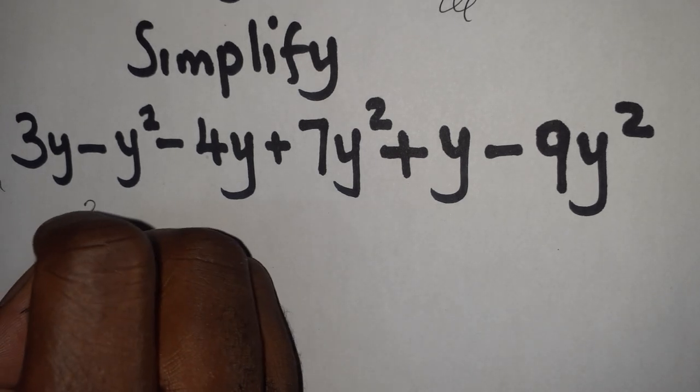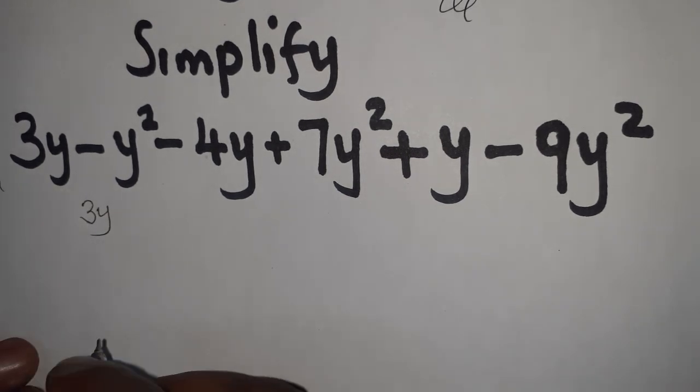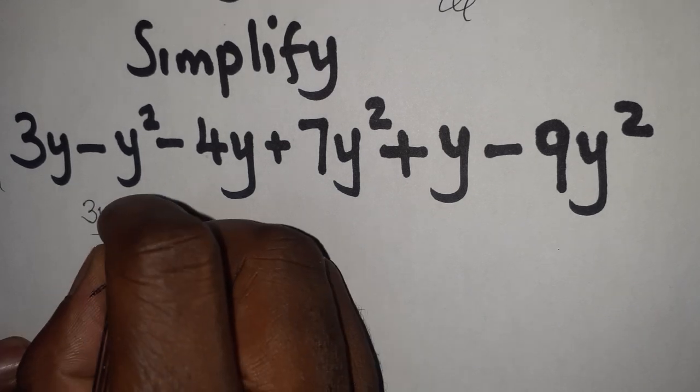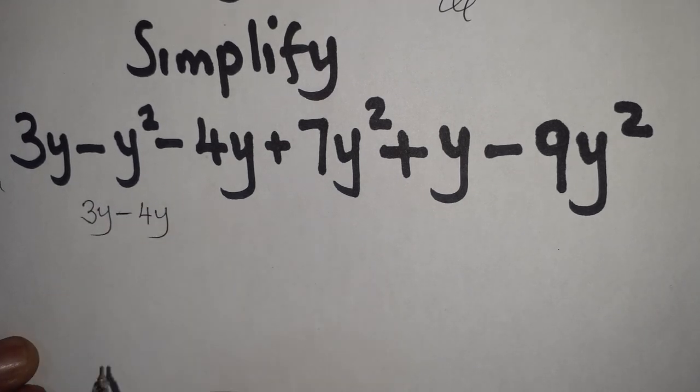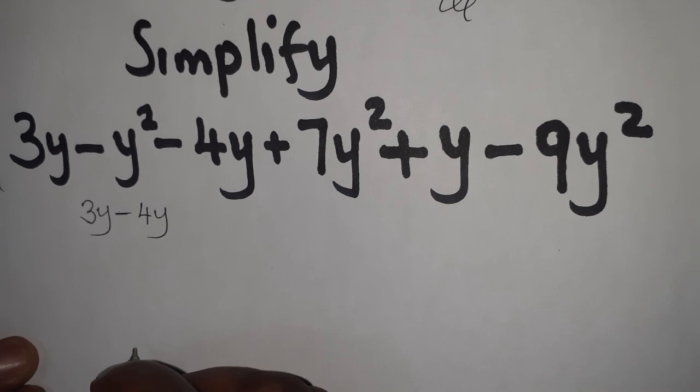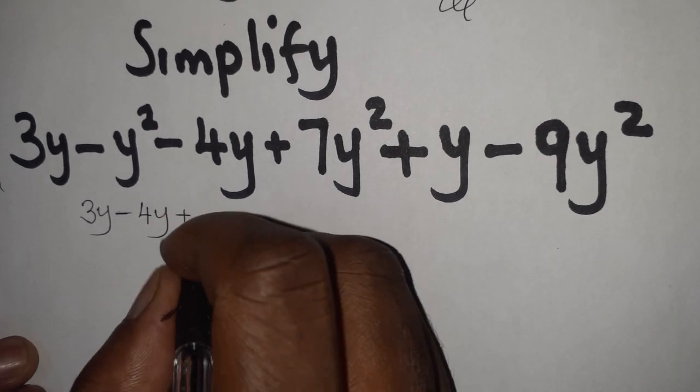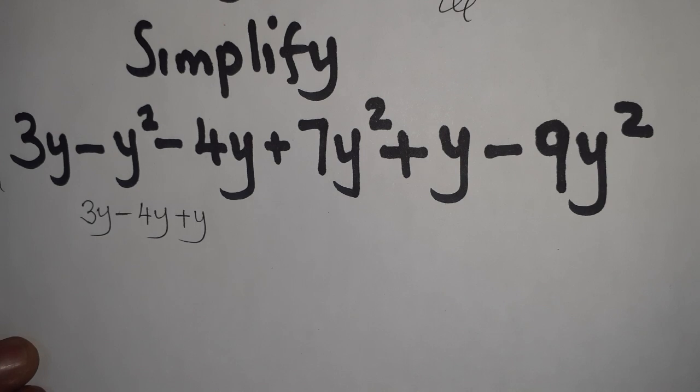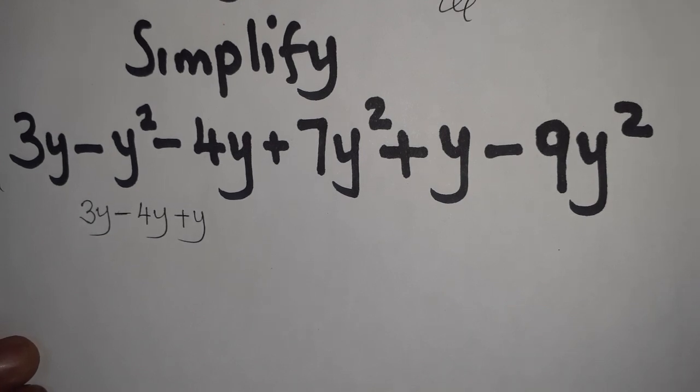So if you look at this, we have 3y here. Alright, the other one is minus y squared, minus 4y, then plus y. Okay, these are like terms here.